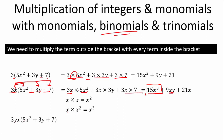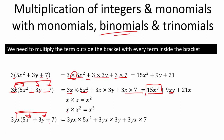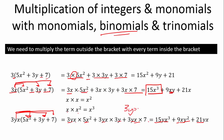Let's now look at 3yx times (5x² + 3y + 7). First we times this term with 5x²: 3 times 5 is 15, y times no other y stays as y, x times x² is x³ — giving 15yx³. Then 3yx times 3y: 3 times 3 is 9, y times y is y², x times nothing stays as x — giving 9xy². Finally 3yx times 7: 3 times 7 is 21, y and x remain — giving 21yx. Just remember that 7 here is 7y⁰x⁰, so the y and x exponents are 1. That is our answer.